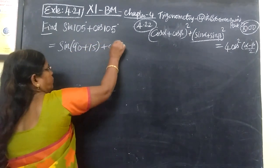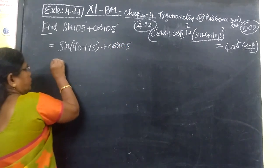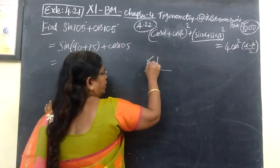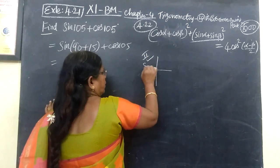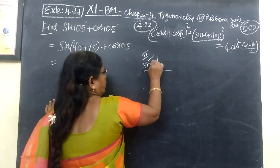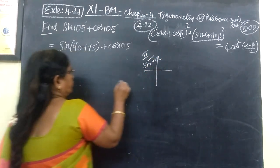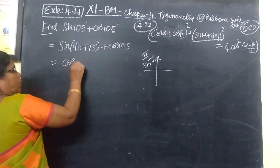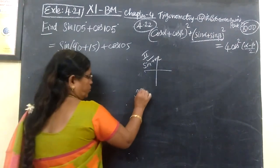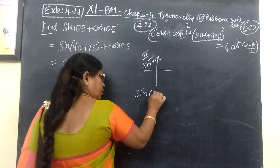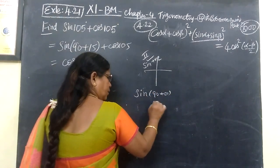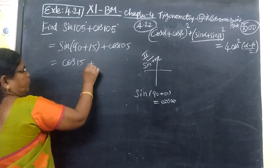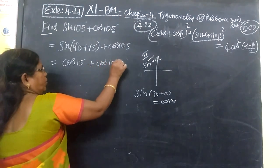Cos 105 is clear. Sin(90 + theta) is in the second quadrant, where the sine value is positive. So here it is positive. Sin(90 + theta) is cos theta. So we know sin(90 + theta) is cos theta. So cos 15, and cos 105 is clear.